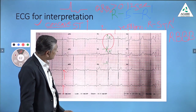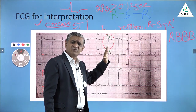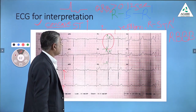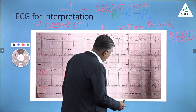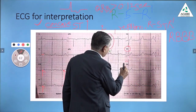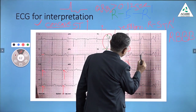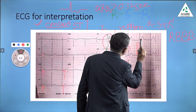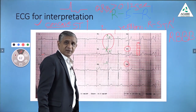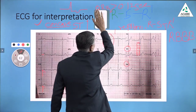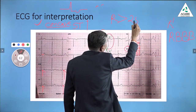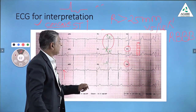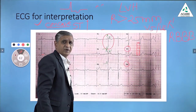This incomplete RBBB is again non-conclusive and is a variant of normal, many times seen in young individuals or sometimes in older individuals as well. The third thing I must tell you is the tall R waves. You can see in V5 or V6 — counting the large squares, the amplitude is more than five. When the height of the R wave is greater than 25 millimeters in V5 or V6, it is likely to be a case of LVH, that is, left ventricular hypertrophy.